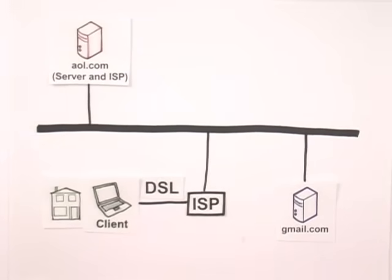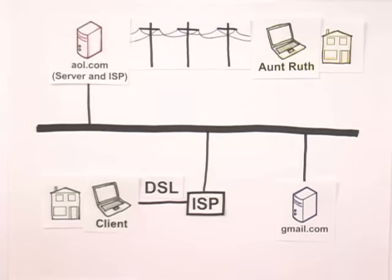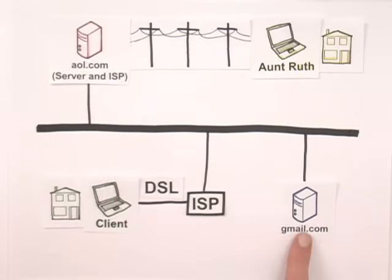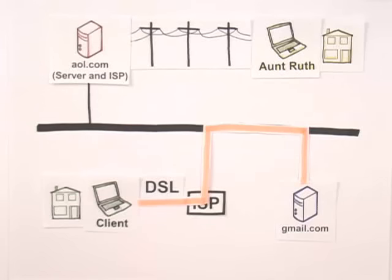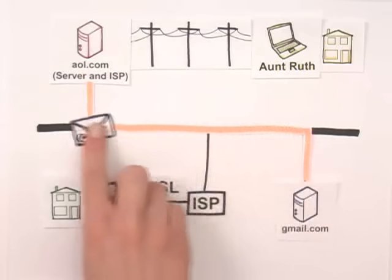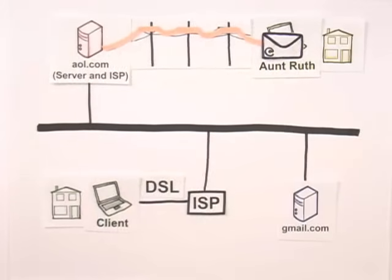I hop onto my laptop with DSL, go through my ISP, onto the internet, and look at AOL.com. My computer connects with AOL.com, and I can look at its web pages. Now, let's say that I want to send an email to Aunt Ruth. Aunt Ruth has AOL dial-up from home, and I've got a Gmail account. I log on to Gmail.com and compose a message to Aunt Ruth's email address, auntruth at AOL.com. Once I click send, Gmail.com sends the email to AOL.com. The next day, Aunt Ruth dials into AOL's servers and retrieves the email.